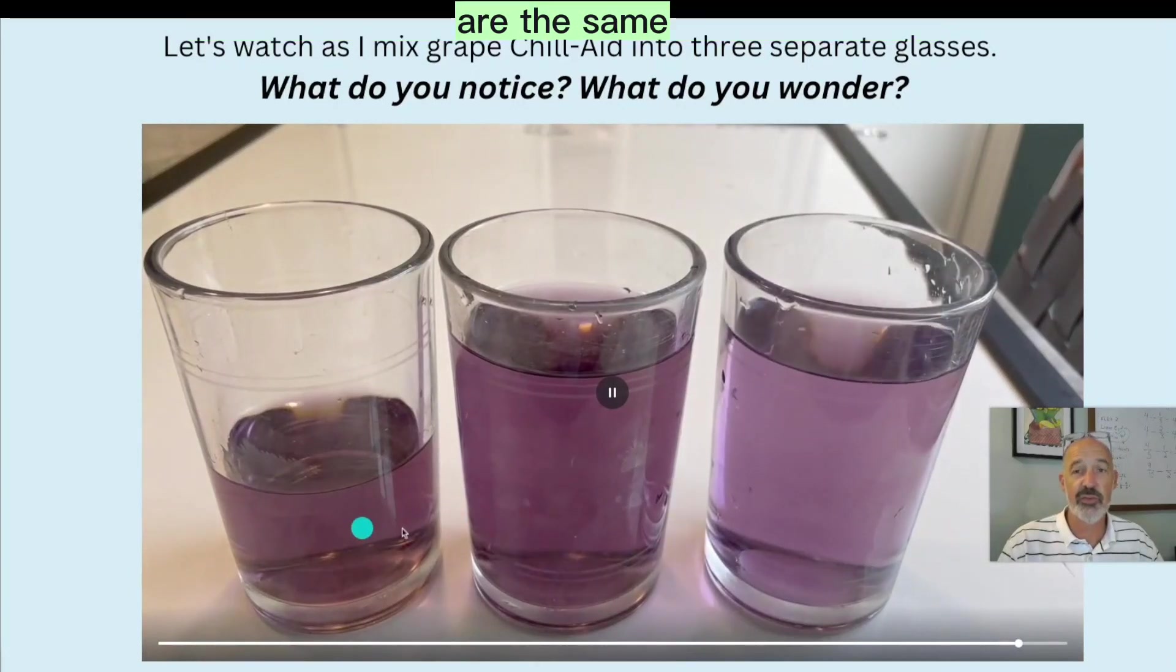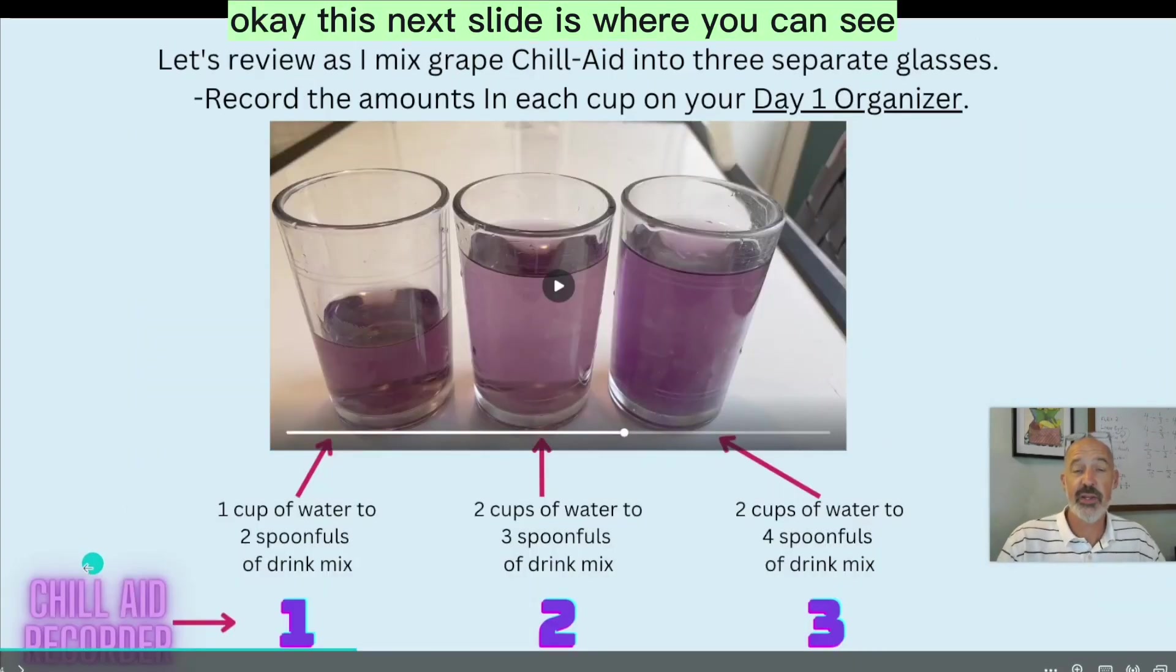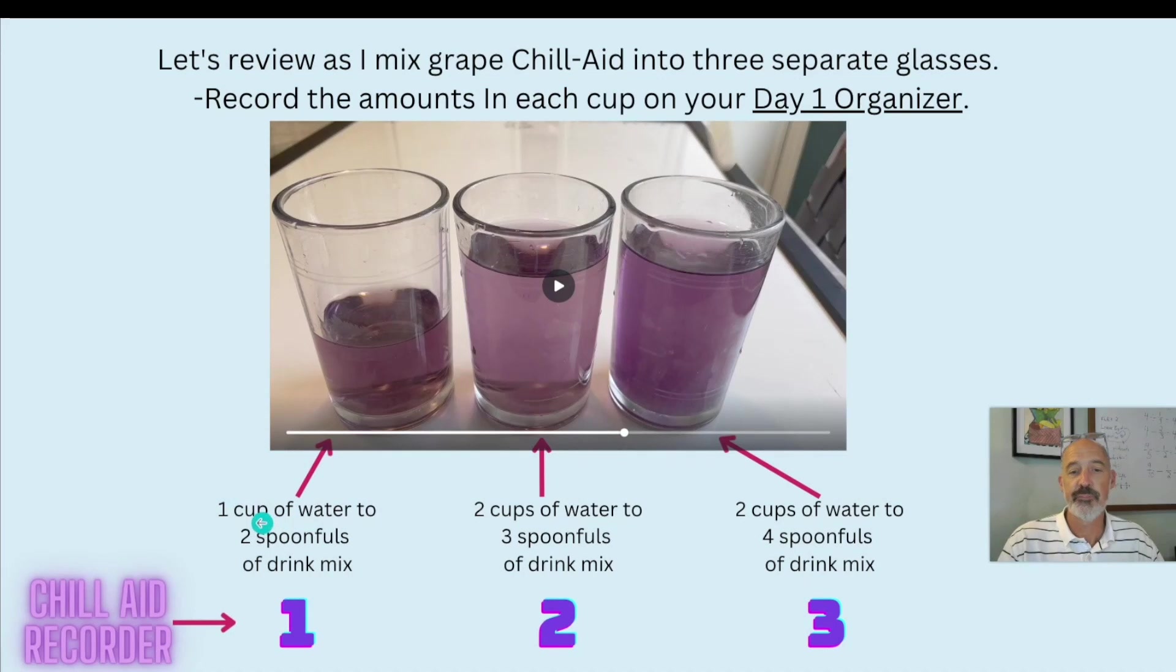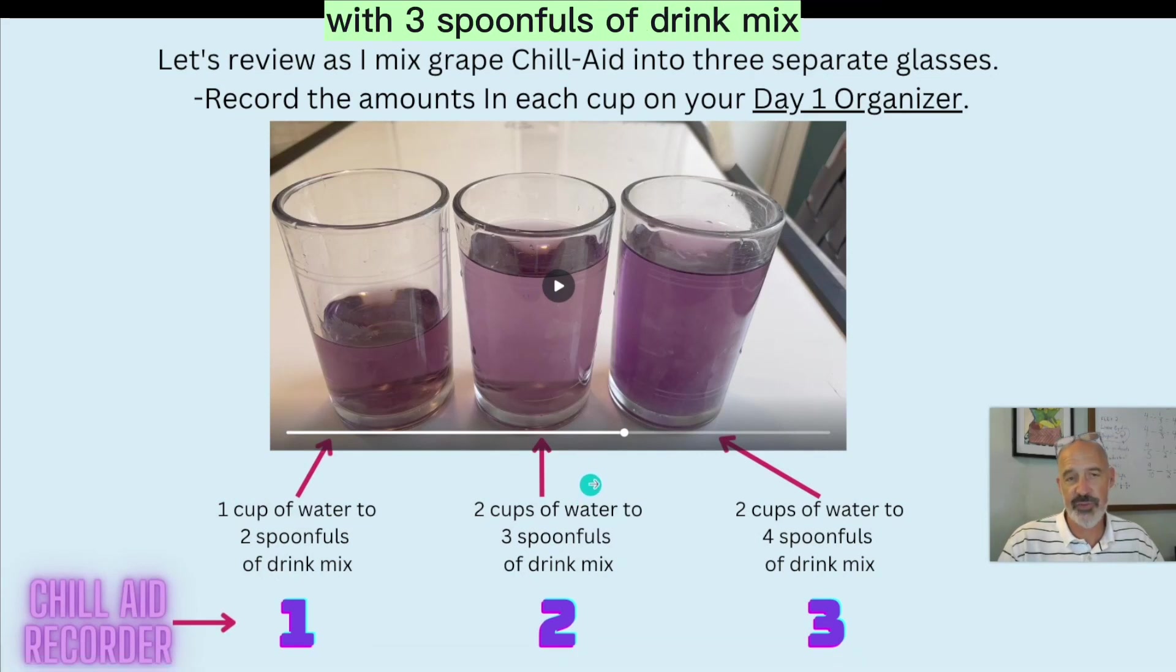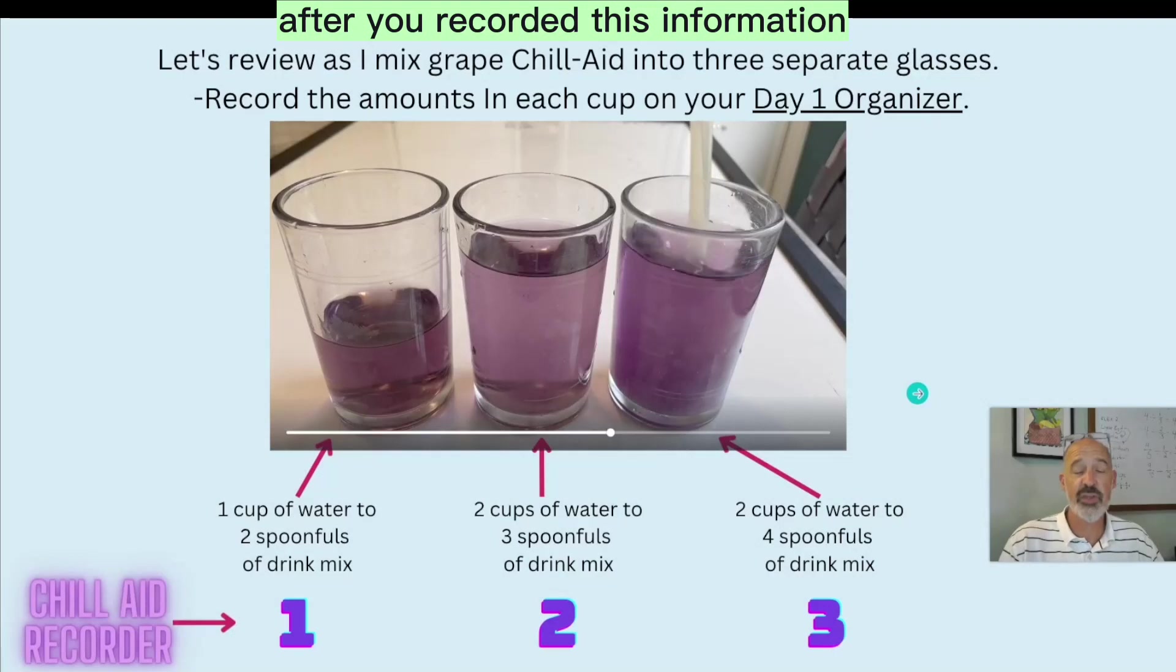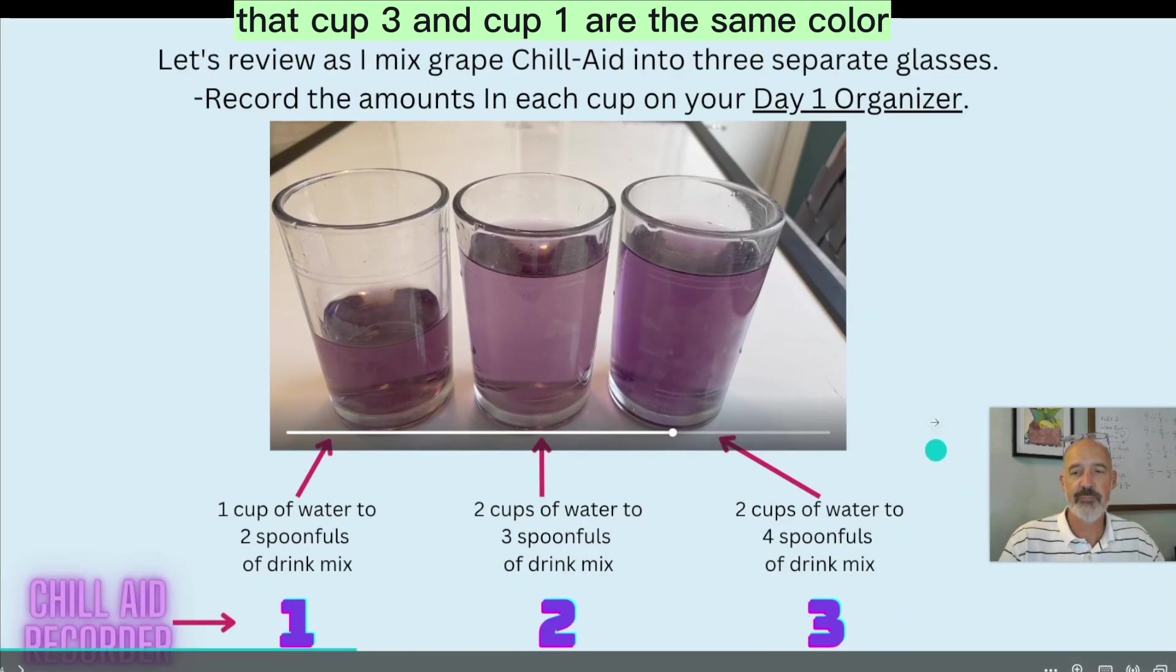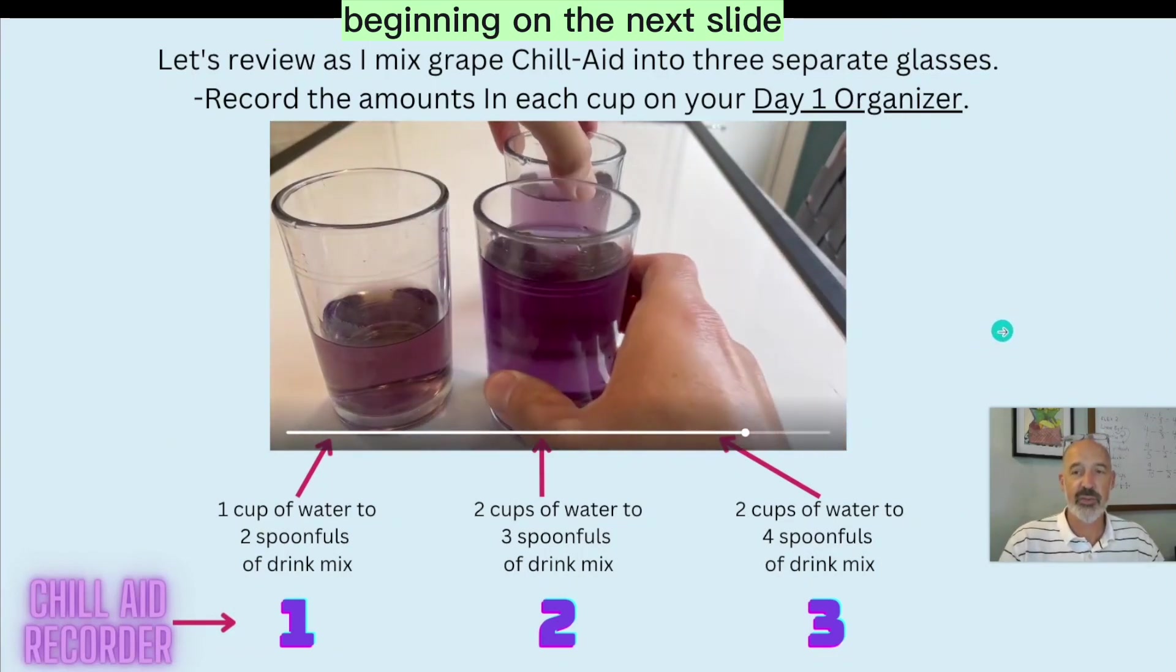So I'm just moving around the two cups so you can see more clearly the colors. And I want you to notice that these two colors are the same. This one is lighter. Now this next slide, okay, this next slide is where you can see, and I'm asking you to review and record the amount in each cup on your day one organizer. So the first cup is one cup of water and two spoonfuls of drink mix. The second cup is two cups of water mixed with three spoonfuls of drink mix. And that last cup is two cups of water with four spoonfuls of drink mix. So if you remember, after you've recorded this information, I moved the cups around just so you can more clearly see that cup three, and cup one are the same color. And that's what we're going to talk about beginning on the next slide.